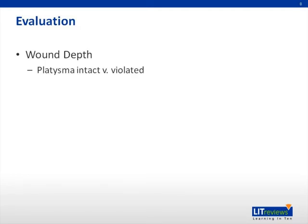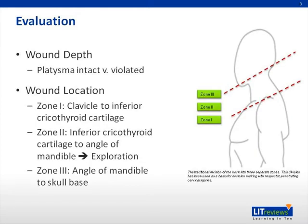After the airway has been secured, evaluation of the wound is essential. In particular, the depth of the wound is very important. The reason for this is if the platysma has been violated, exploration of the neck is usually mandated. Traditional zones of 1, 2, and 3 were used in the past, and zone 2 was usually indicative of a mandatory exploration. However, this is no longer the case.